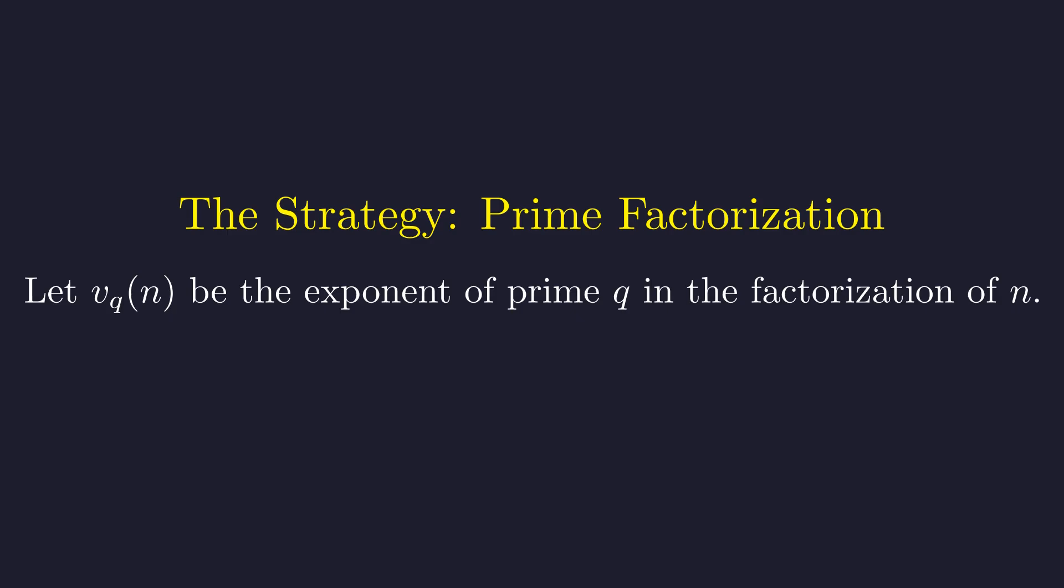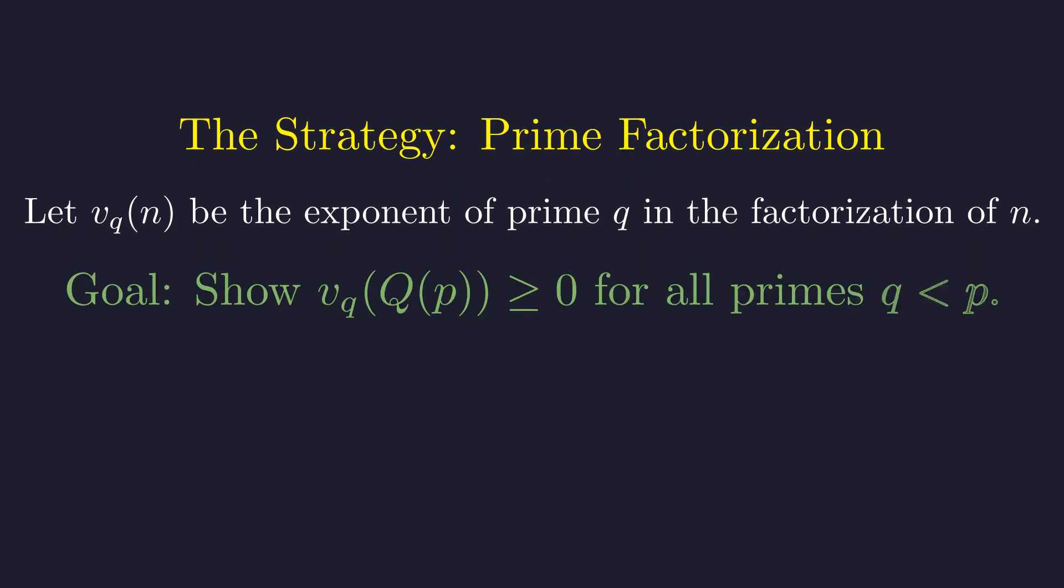To make this precise, let's introduce a handy piece of notation: the q-adic valuation v_q of n simply counts how many times the prime q divides n. For instance, v_2 of 12 equals 2 because 12 equals 4 times 3 and 4 is 2 squared. So here's our plan: we need to show that for any prime q less than p, the power of q in our product Q(p) is non-negative.